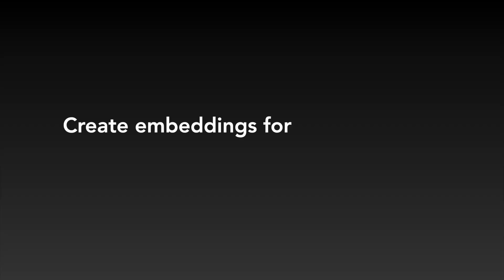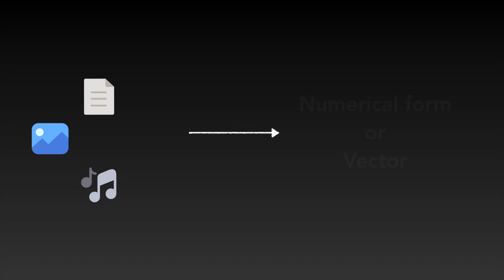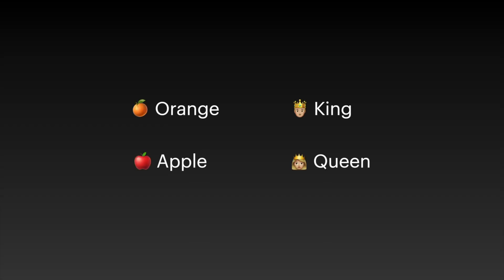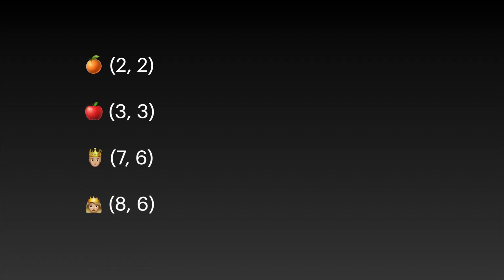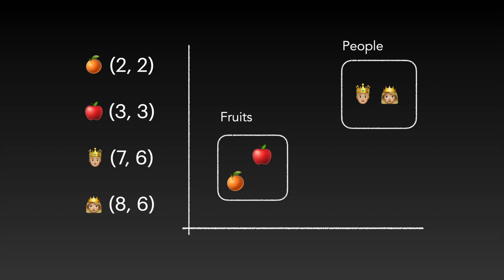Now that this is done, I will create embeddings for each chunk of data. Embeddings are a way to represent information — text, images, or even audio — into a numerical form, also known as a vector. Imagine you want to store the following words: orange, apple, king, and queen. These could be stored as vectors, for example orange at (2,2), apple at (3,3), king at (7,6), and queen at (8,6). If we represent this on a 2D graph, you can see that apples and oranges are closer to each other, and queen and king are also next to each other, because they are more alike — apples and oranges are fruits, while queen and king are related to people.